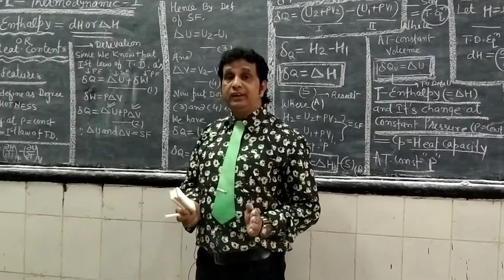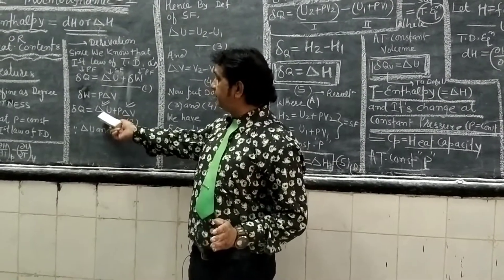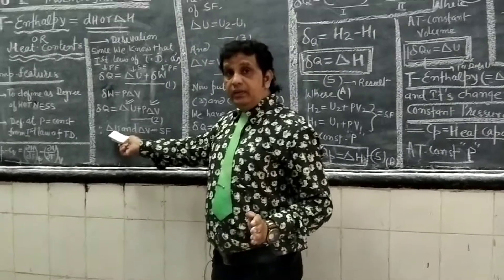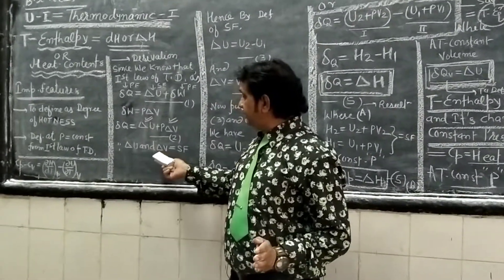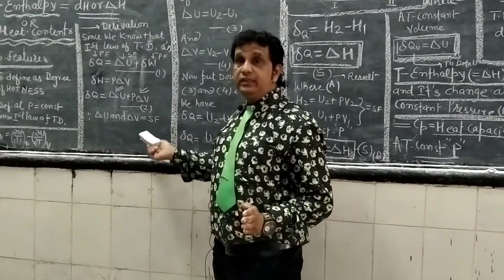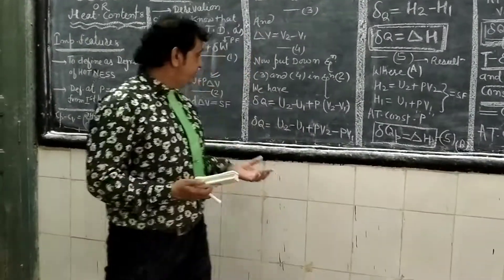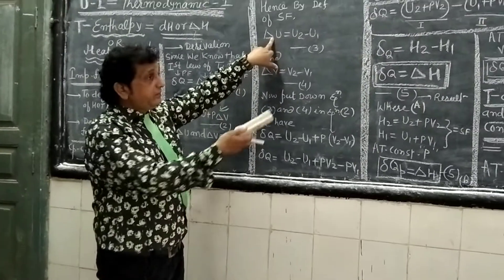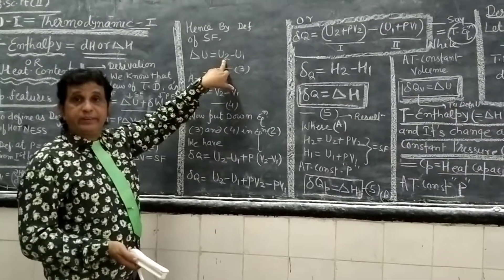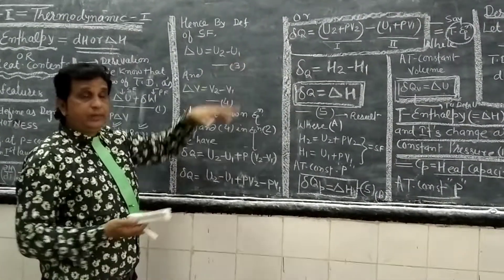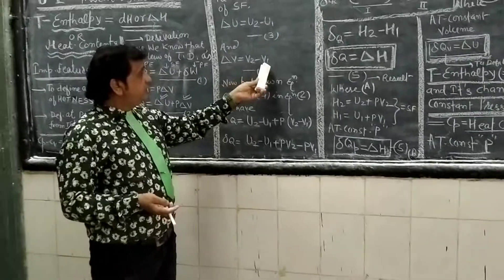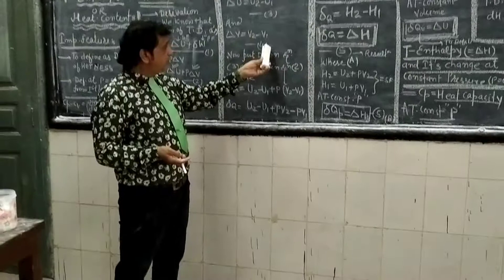To solve for any physical quantities or state variables, since ΔU and ΔV are state functions, we write: ΔU = U₂ − U₁ (equation 3) and ΔV = V₂ − V₁ (equation 4). Substituting equations 3 and 4 into equation 2: ΔQ = (U₂ − U₁) + P(V₂ − V₁).